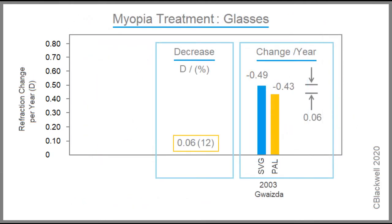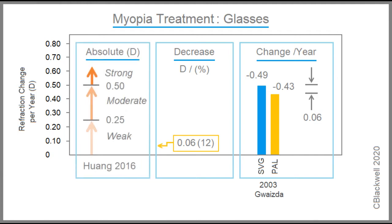Let's apply that to an example. The Comet study used progressive bifocal lenses which resulted in an average decrease in myopia of 0.06 diopters per year compared to the control. On the Wang scale, the Comet study shows a weak effect, as the authors of the study confirmed, and they suggested it was not worthwhile as a treatment option.